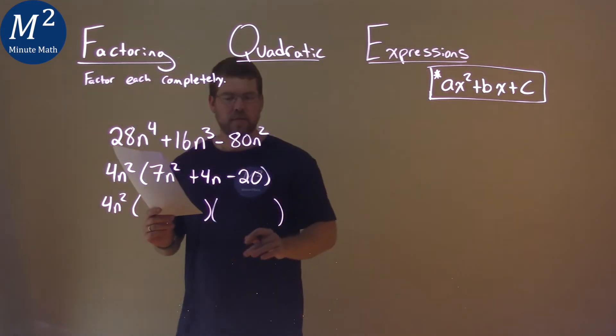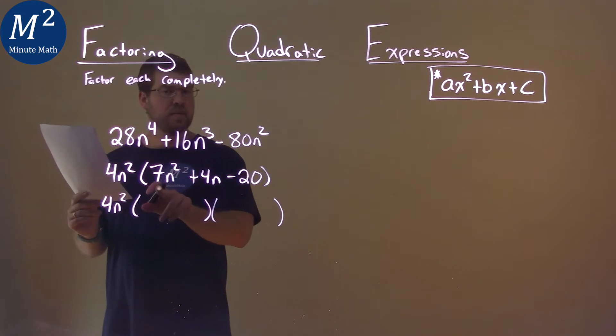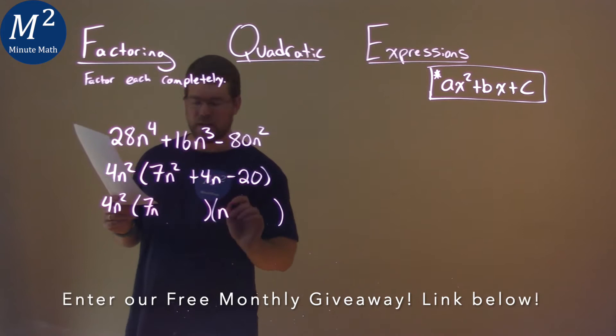Well, our a value inside the parentheses from here on out is 7, a prime number. So we know it has some form of 7n, and then this one is just an n here.